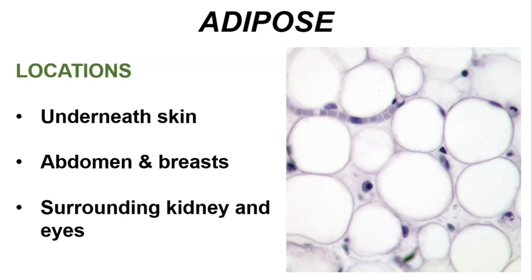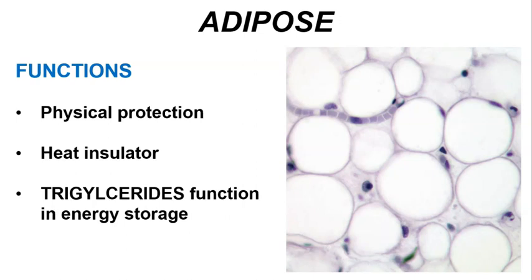Adipose tissue is the last of the loose connective tissues. The large bubble-like cells in adipose tissue are packed with lipids called triglycerides. It is primarily located underneath the skin, between the skin and the skeletal muscles, and is also a major component of breast tissue and is found in the abdomen. It surrounds delicate organs such as the kidneys and the eyes, providing physical protection. Underneath the skin it functions as a body heat insulator, and the triglycerides stored within it serve as a fuel reserve, metabolized to make ATP energy, specifically when we are resting or sleeping.